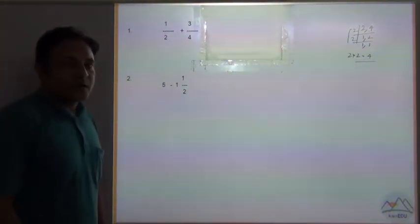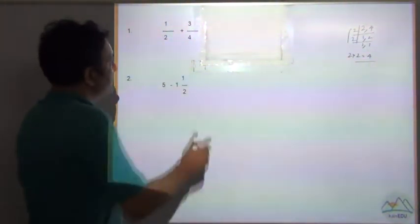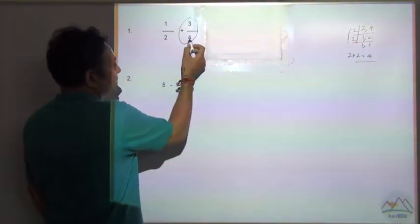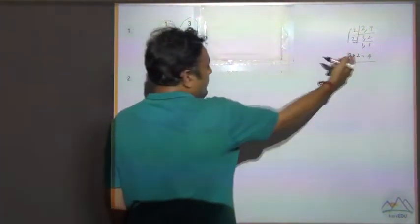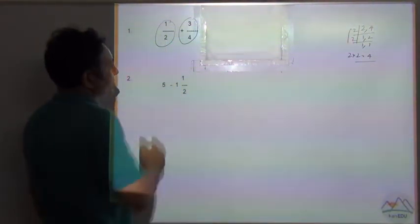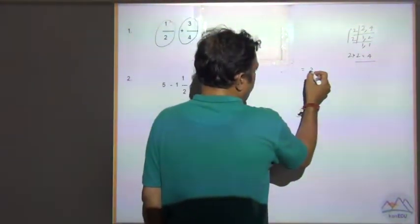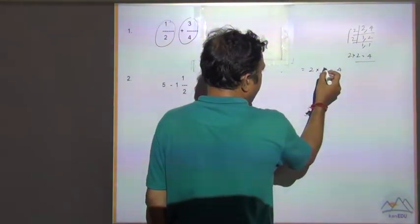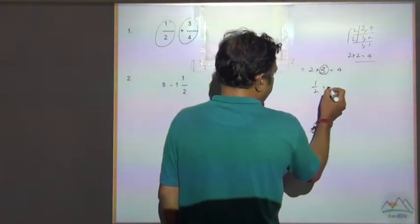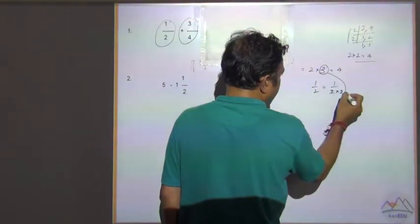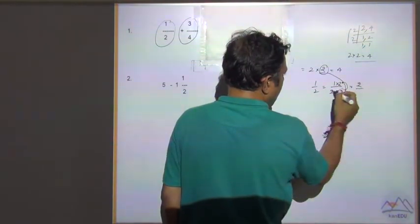The next rule says to convert all fractions so their denominators are equivalent to the LCM. The denominator 2 is not equal to 4, so we need a suitable number to multiply with 2 to get 4. That number is 2. So 1 by 2 multiplied by 2 over 2 gives us 2 by 4.